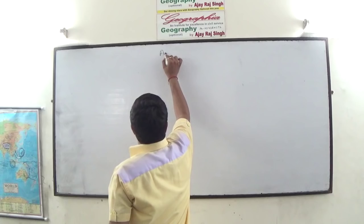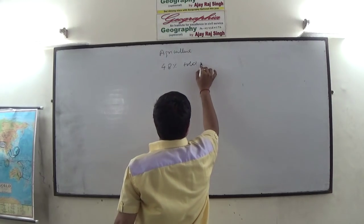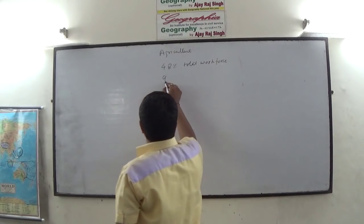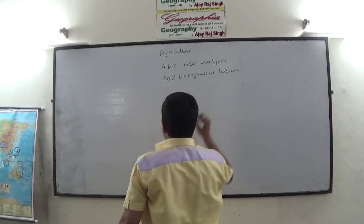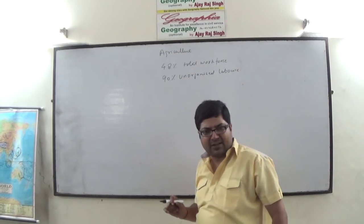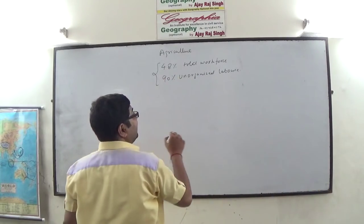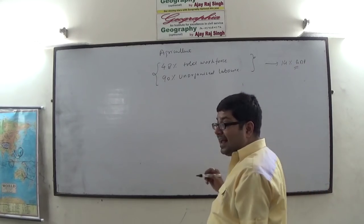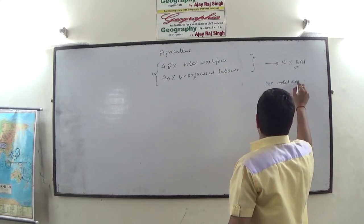In India, agriculture still accounts for 48% of the total workforce of the country, and 90% of the unorganized labor — those people who don't have any social security. 90% of the unorganized labor are deployed in agriculture, which is why we say agriculture is having disguised unemployment. Despite this fact, agriculture accounts for just 14% of GDP and 10% of the total export earnings of the country.